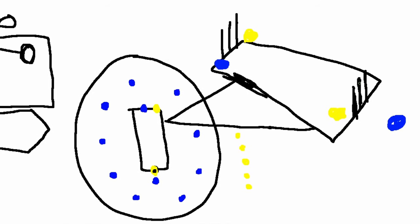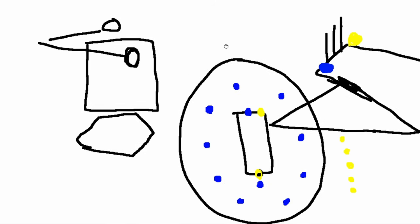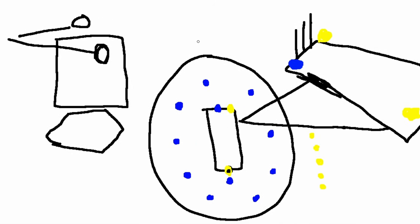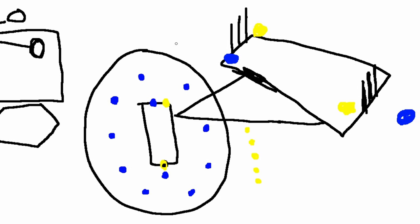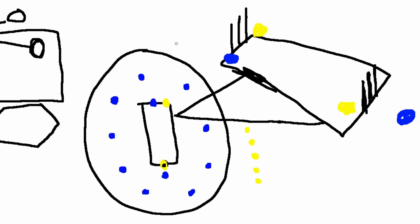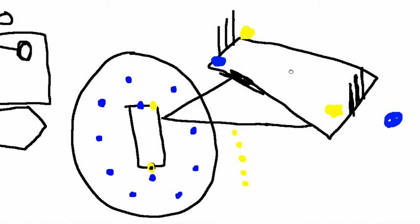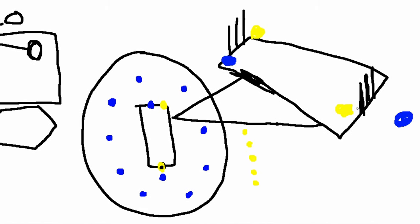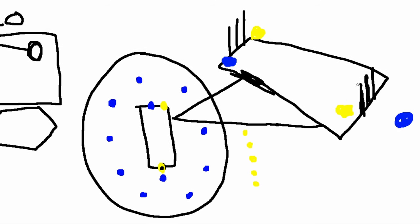Except in cricket you kind of only get one strike and one out. In baseball, when you're up at the plate, whether an out is made or you get a hit your turn is over, and you get multiple turns per game. In cricket you just keep hitting the ball until you get out, and each person on the team only gets one turn.